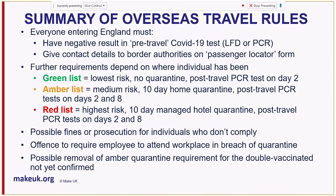The government has classified countries according to their COVID-19 risk level, based on rates of transmission and the progress of the country's vaccination programme, and has placed them on green, amber and red lists, with the countries on the green list being those at the lowest risk.